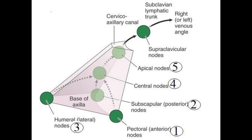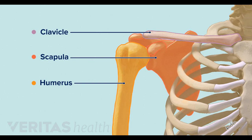Your subscapular lymph nodes are found along the posterior axillary fold and the subscapular vessels. The central axillary lymph nodes are found deep to pectoralis major and are associated with the second part of the axillary artery. Finally, your apical lymph nodes are found in the apex of the axilla. You also need to know the number of lymph nodes found in each group.